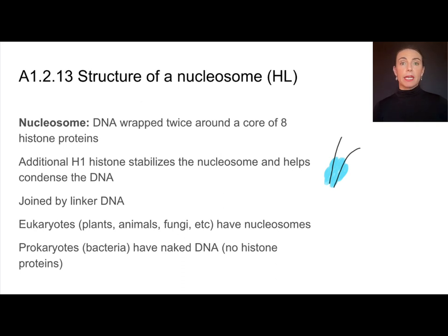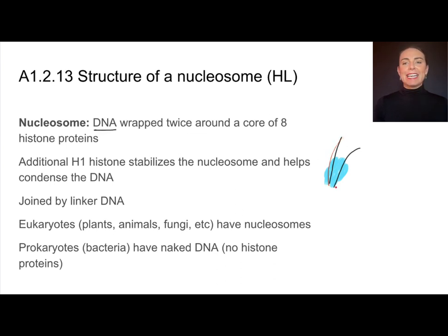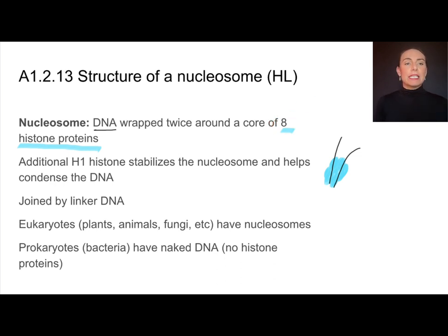Another thing that enhances the stability of the DNA molecule is a structure called a nucleosome. Nucleosomes are only found in eukaryotic cells — prokaryotes like bacteria don't have them — because nucleosomes are structures built around histone proteins. I've drawn the DNA in black here, and this DNA is wrapped twice around a core of eight special histone proteins. You may hear this referred to as an octamer of histone proteins, octo meaning eight. In addition to that core, we also have an H1 histone outside the main core, which helps stabilize the nucleosome.